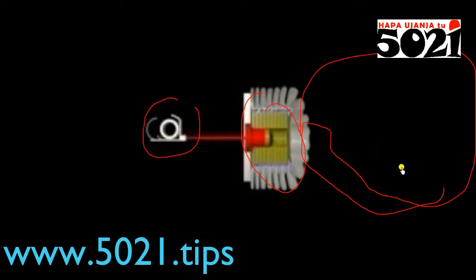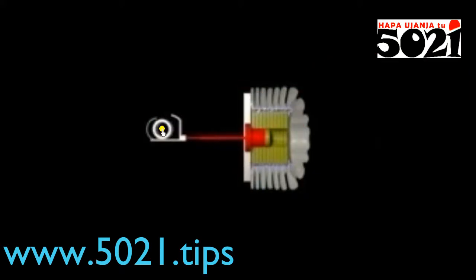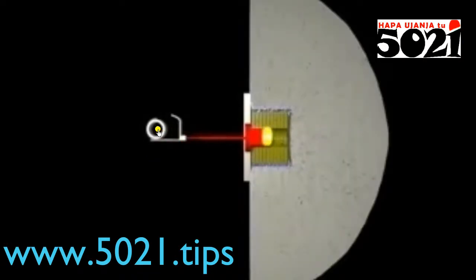Look at it this way: this is the crash sensor. Inside the car there is a ball that can move freely. When the car is moving normally the ball moves gently. But when a strong force hits — like a crash — the ball moves and makes contact here and here. When those contacts connect, it sends a signal, and that signal goes to the inflator to deploy the airbag.